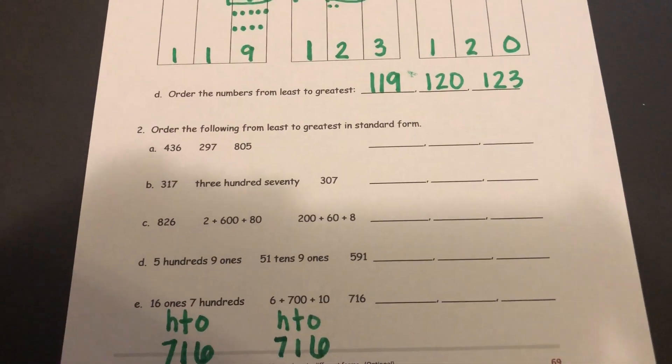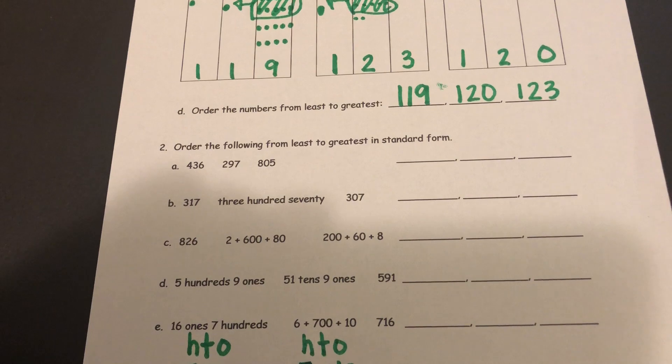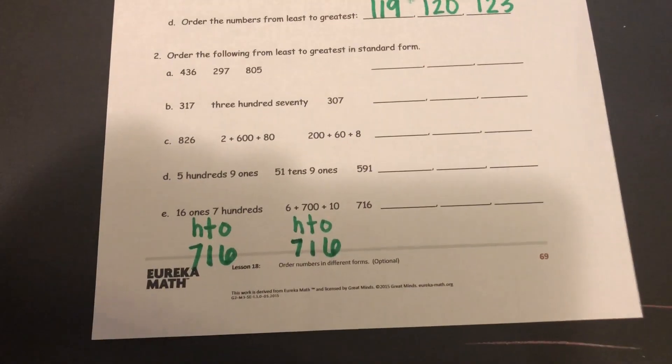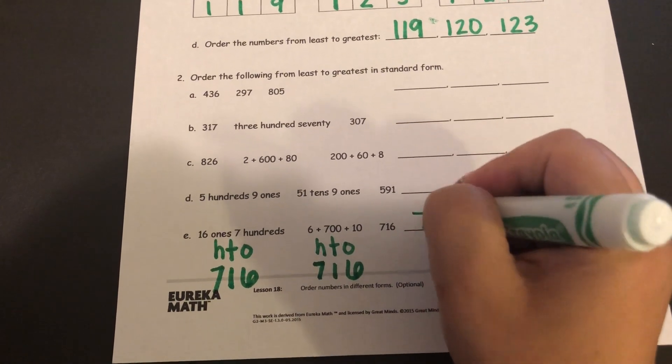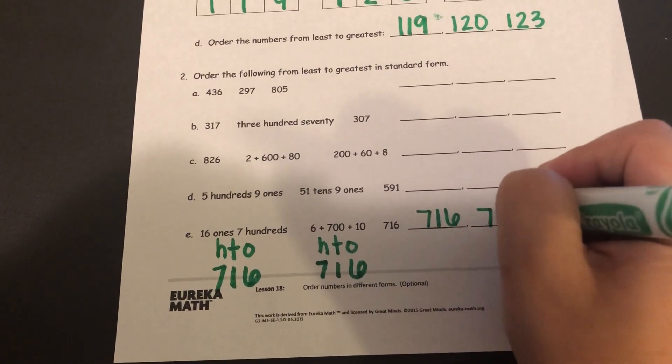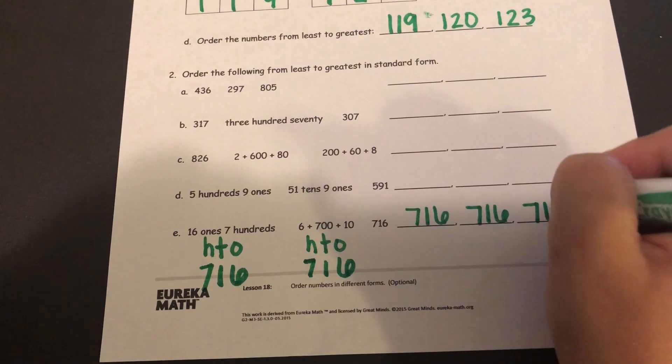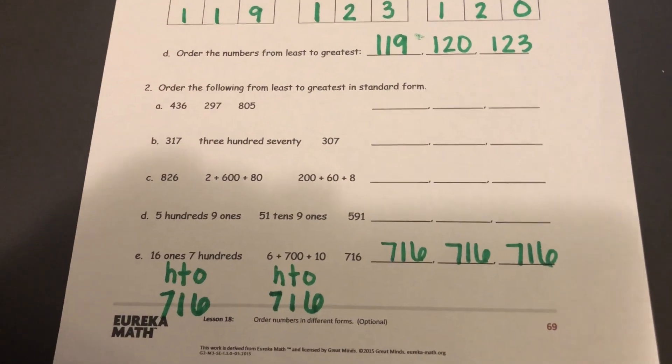So looking at the directions, it says to order them from least to greatest in standard form, but they're all the exact same number. So I would just write 716, 716, 716. Well, that was a weird one to show because they're all the same number.